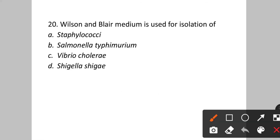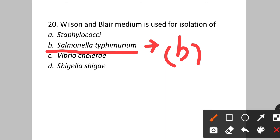Question number twenty: Wilson and Blair medium is used for isolation of which organism? Option A: Staphylococci. B: Salmonella typhimurium. C: Vibrio cholerae. D: Shigella shigae. Wilson and Blair medium is used for the isolation of Salmonella typhimurium, which causes typhoid. Option B will be the correct answer.